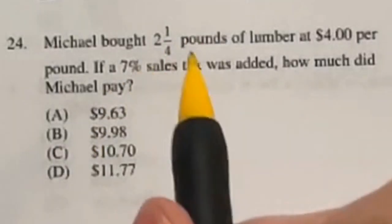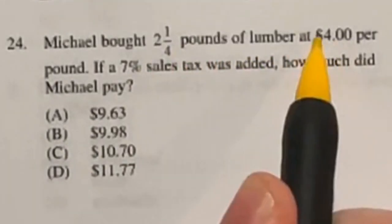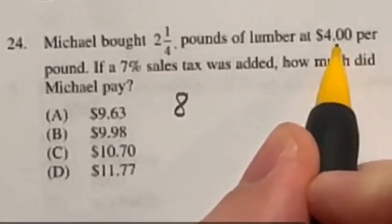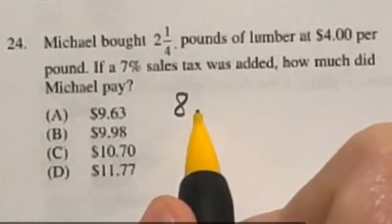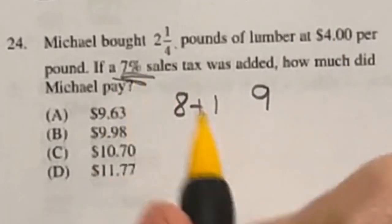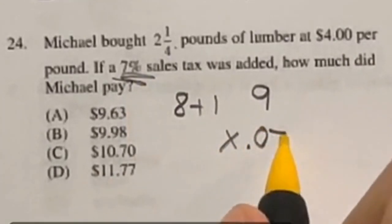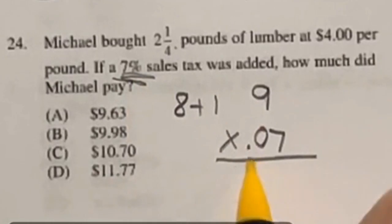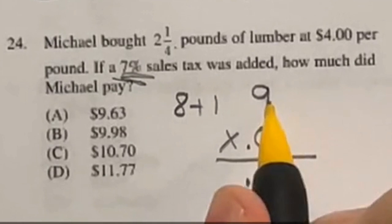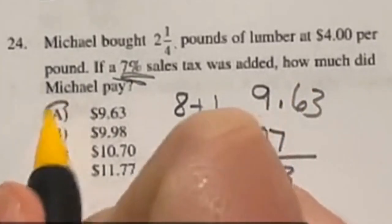For number 24 we're finding a total price. 2.5 pounds of lumber at $4 each: 2 times $4 is $8, and one-quarter pound is $1, giving $9 total. Adding a 7% tax means multiplying by 0.07: 7 times 9 is 63, so the tax is $0.63. Adding $0.63 back to $9 gives a total of $9.63, which is option A.